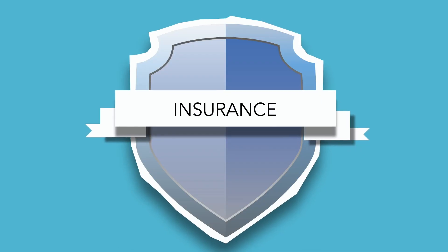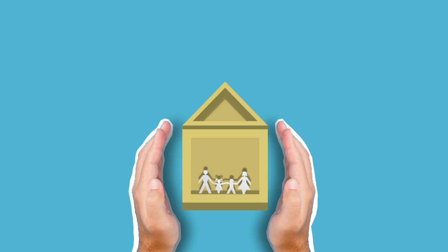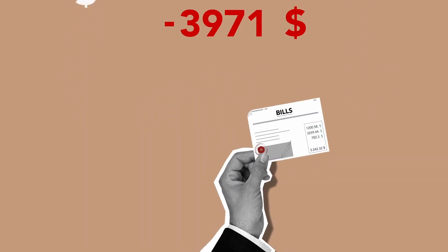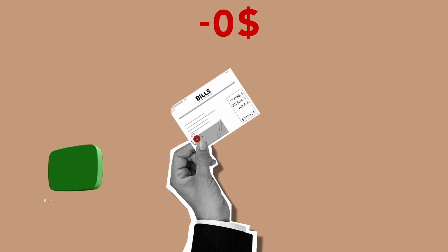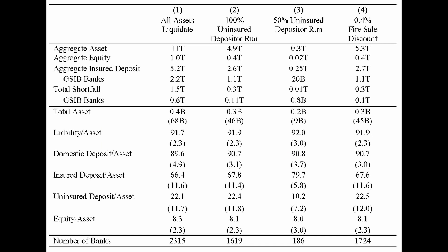Uninsured depositors, unlike insured ones, risk losing a portion of their deposits if a bank fails, providing them an incentive to withdraw their money. The authors used the recent failure of Silicon Valley Bank as a case study, showing that it wasn't the worst-capitalized bank, but it had a disproportionately high level of uninsured funding. They also found that 10% of banks have larger unrecognized losses and lower capitalization than SVB. They calculated that if only half of uninsured depositors withdraw their money, almost 190 banks could potentially risk impairing insured depositors, with an estimated $300 billion of insured deposits at risk. If such withdrawals trigger even small asset fire sales, many more banks could be at risk.